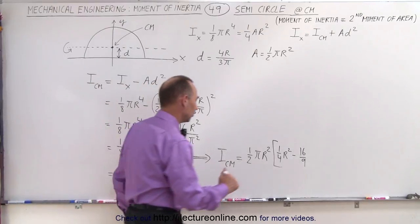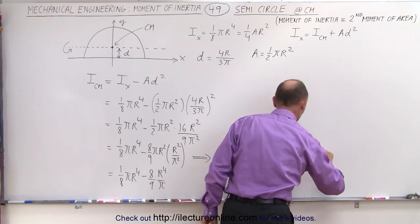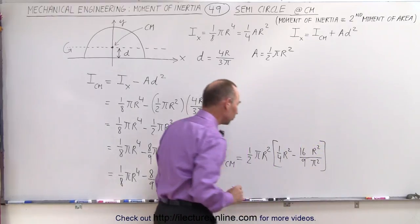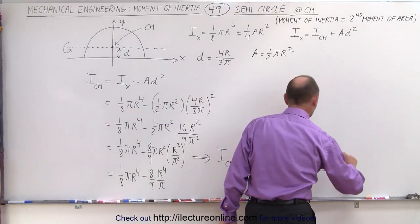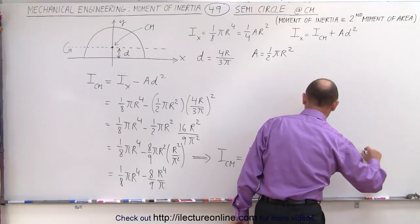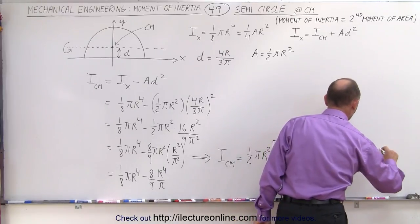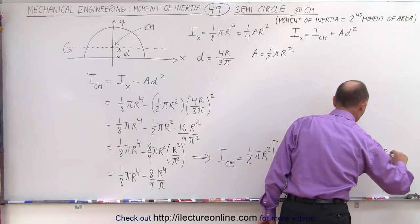I pull out a pi, so I have a pi squared in the denominator and an r squared in the numerator. So I can also write it like that, and of course then I know that that's equal to the area, so this is equal to the area times 1 quarter r squared minus 16 over 9 pi times r squared as well.